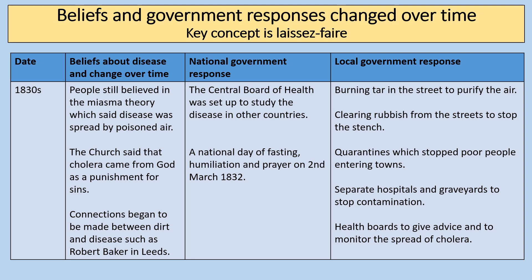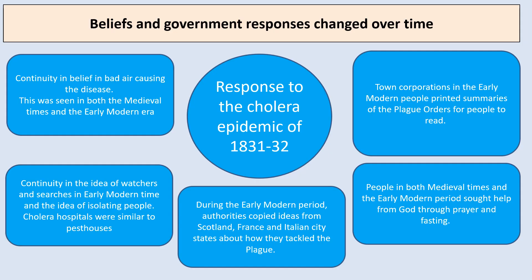Beliefs and government responses changed through time in relation to cholera. In the 1830s people still believed in the miasma theory — that disease was spread by poisoned air. The church told people cholera came from God as a punishment for sins, but some connections were beginning to be made between dirt and disease, such as by Robert Baker in Leeds. The national government set up a Central Board of Health to study disease in other countries and a National Day of Fasting, Humiliation and Prayer on 2nd March 1832. Local government responses included burning tar on streets to purify the air, clearing rubbish, quarantines, separate hospitals and graveyards, and health boards to limit the spread of cholera.